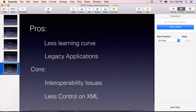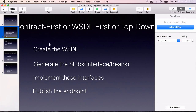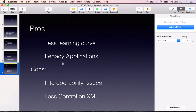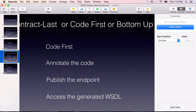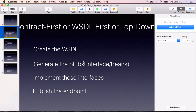Now that you know these two approaches, which one to use when? As much as possible, we should be doing the contract first approach wherein we create the WSDL file first. Only when dealing with legacy applications where it is impossible to start from scratch should we use the Java first approach. If you feel the WSDL first approach is difficult, you can start with the Java first approach, generate the skeleton WSDL, and then from that point do the WSDL first approach — changing the WSDL and then generating the stubs.